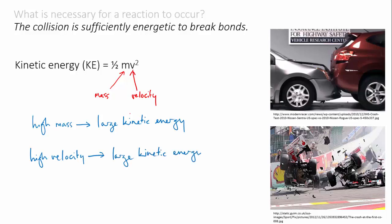It's the same with molecules. Heavy, fast molecules collide with greater energy than light, slow molecules. Now, for a given reaction, we can't do anything about the mass of the molecules. It's fixed. So the variable we're really interested in is how fast the molecules are going.